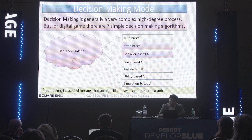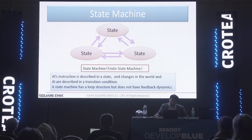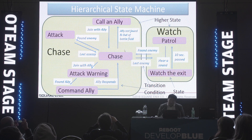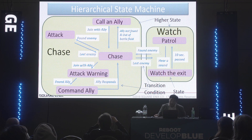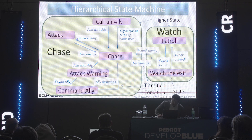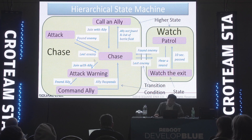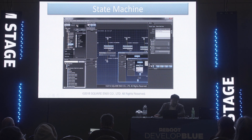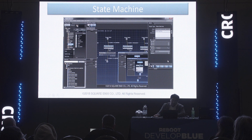State-based AI was very popular in the 1990s. Each state includes character actions, and arrows represent transitions between states. For example, a typical state machine has states like chase and watch, with transitions triggered by finding or losing an enemy. A hierarchical state machine includes two state machines in two layers — a large state machine containing small state machines within individual nodes. Square Enix developed original tools for making state machines, used by game designers via mouse actions and parameter settings.